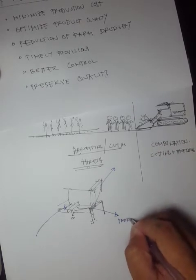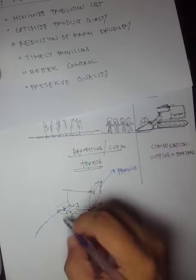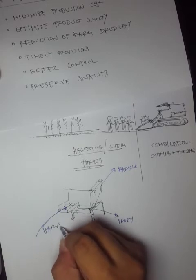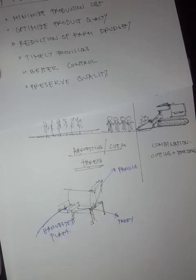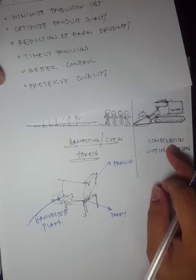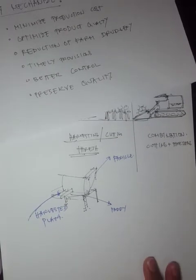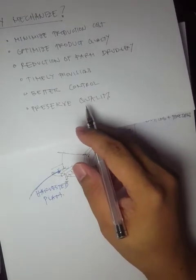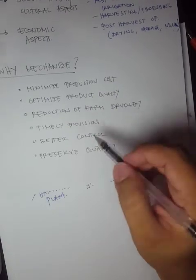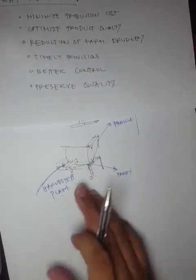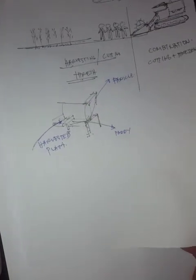Unlike manual operations where threshing is a separate step, the combine harvester simultaneously cuts and threshes, separating the paddy from the panicle in one pass. This illustrates the benefits of mechanization. Now let's discuss the different levels of mechanization, which are listed in four categories in our lecture handout.